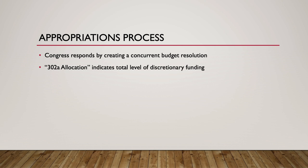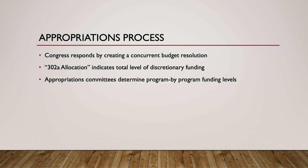Congress is supposed to file all budget resolutions by April 15th. From this point, the funding process moves to the appropriations committees in each chamber. Appropriations is responsible for determining program-by-program funding levels, completed through 12 separate appropriations bills, each generated by a specific subcommittee.